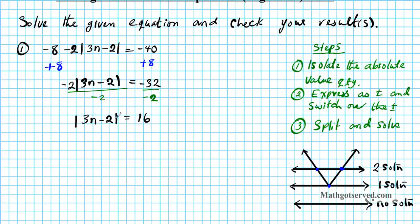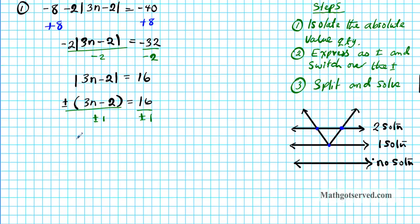We're done with step 1. Now let's move on to step 2: express this absolute value as plus or minus, giving plus or minus of 3n minus 2 equals 16. To move the plus or minus over, divide both sides by plus or minus 1. So we have 3n minus 2 equals plus or minus 16. Now steps 1 and 2 are done. The last step is to split the equation into two — that's where the plus or minus causes the split.